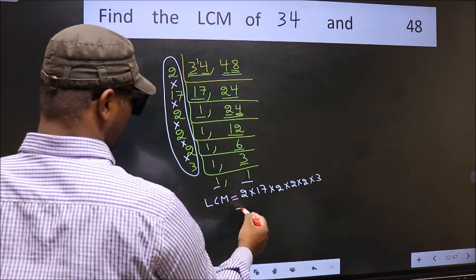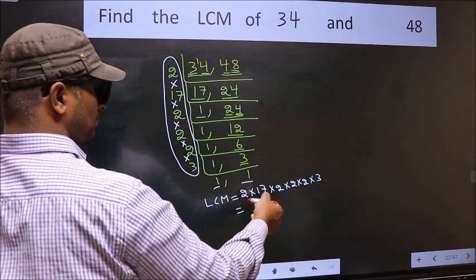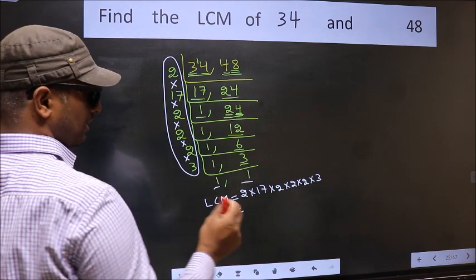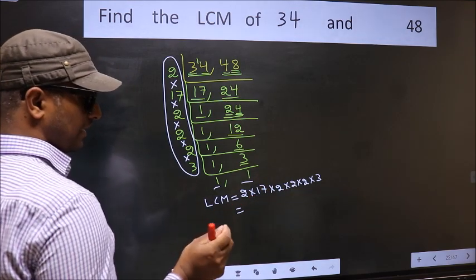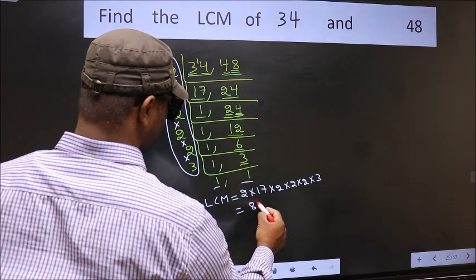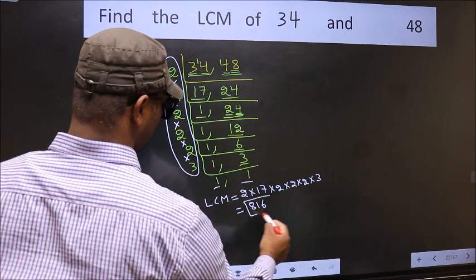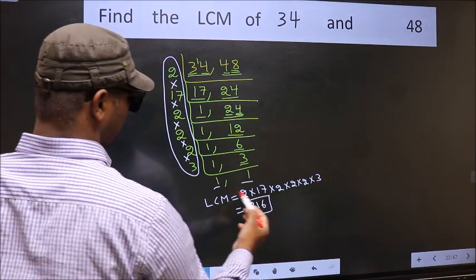When we multiply these numbers, we get 816. So 816 is our LCM.